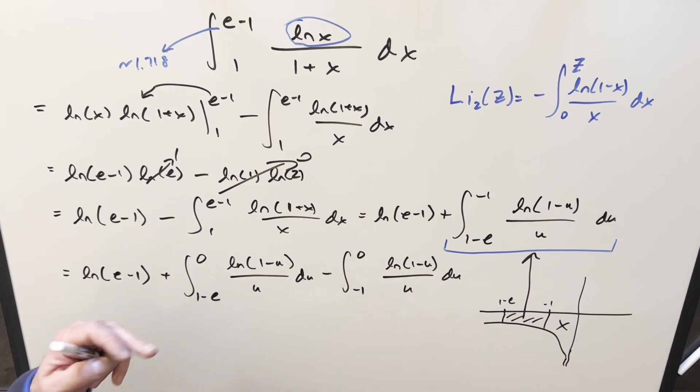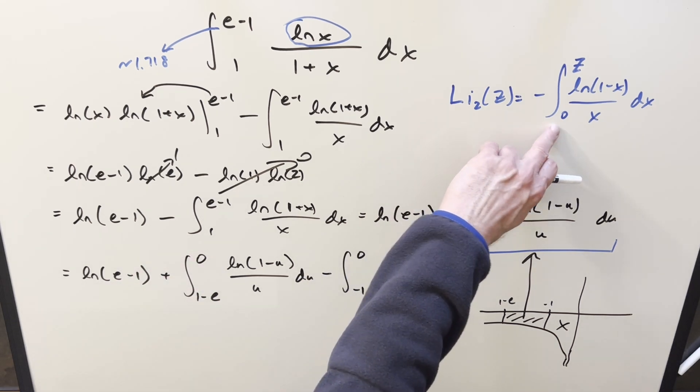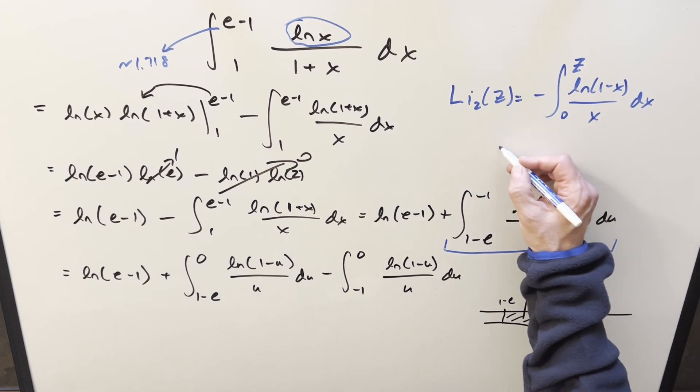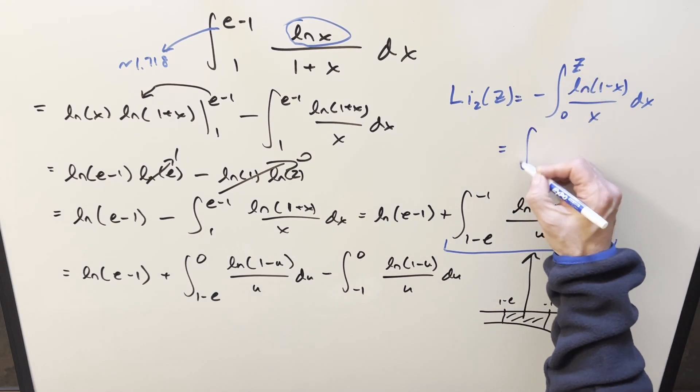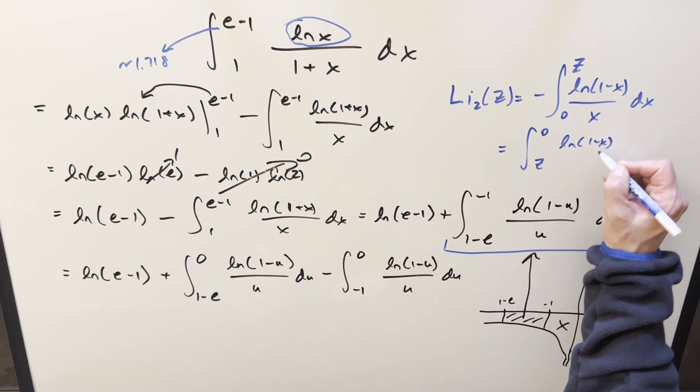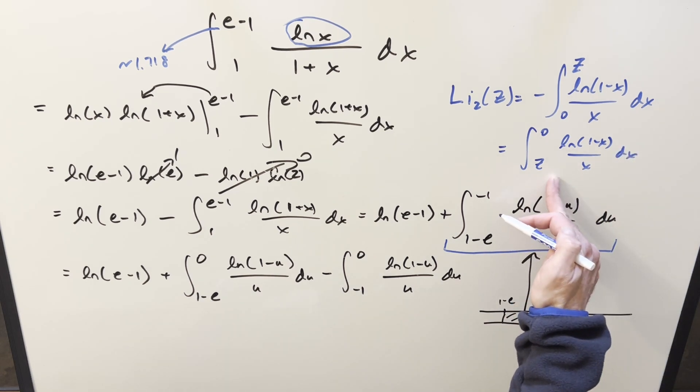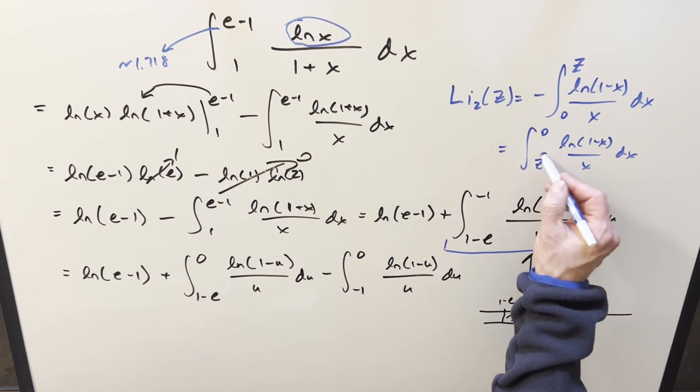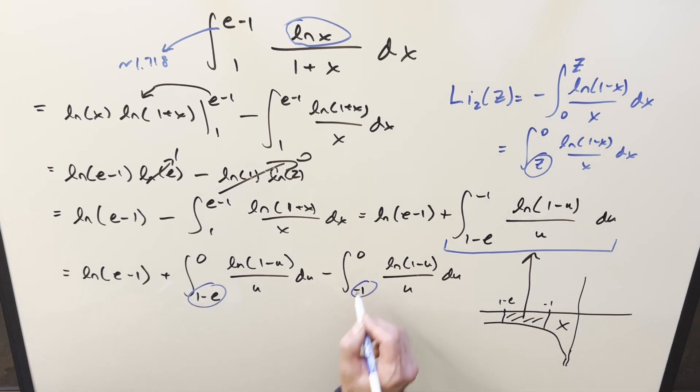So then one small trouble with what we have here is we've got 0 in the upper bound. In our definition, we've got 0 in the lower bound. Well, that's really easy to fix. So in this case, let's just change the definition. I can use the minus sign to flip the bounds here. And so I can write this formula now as z to 0, ln 1 minus x, all the same stuff. And so now using this second definition, we can put this in terms of the dilogarithm with the input z. So the way we can write this whole thing is just natural log e minus 1 plus dilogarithm 1 minus e, and then here minus dilogarithm of minus 1.